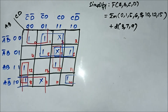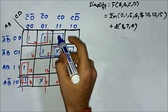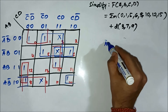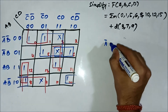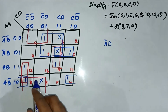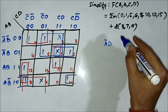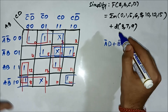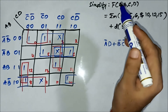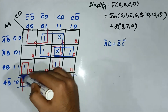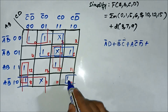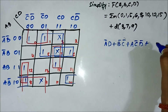Now we identify the common variables. For the quad involving cells 1, 3, 5, 7: in the horizontal side we have Ā common, in the vertical side we have D common, giving Ā·D. For the quad involving cells 0, 1, 8, 9: in the horizontal side we have B̄ common, in the vertical side we have C̄ common, giving B̄·C̄.